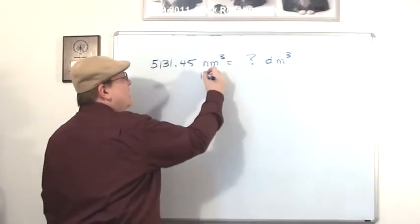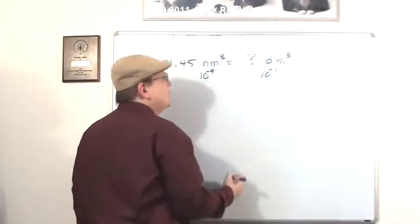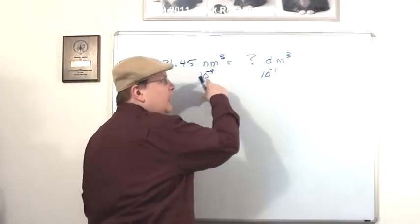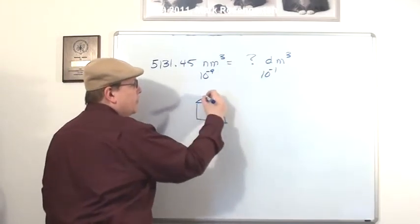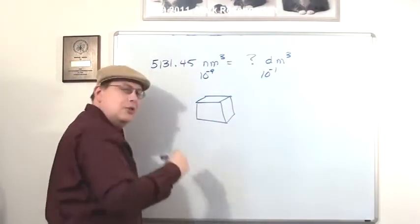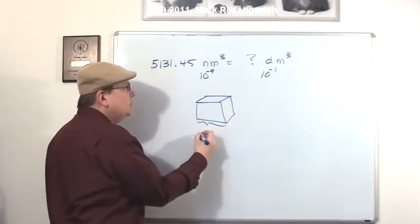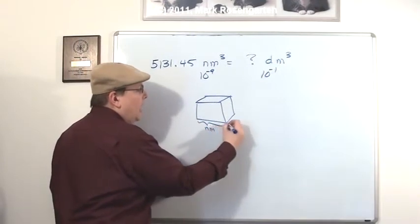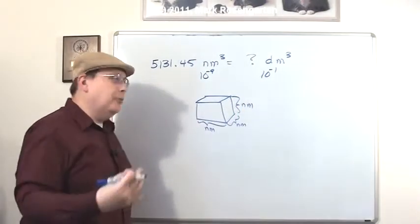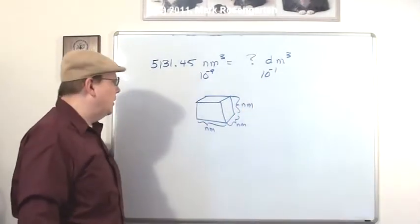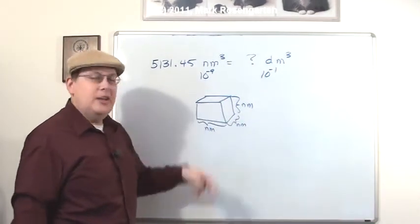The first thing you need to do is find out what the distance is between the factor of nano and the factor of deci. Now nano is 10 to the negative ninth meters, and deci is 10 to the negative first meters, a billionth of a meter and a tenth of a meter. Now what we're doing is when you're dealing with volume, you're dealing with cubic distance. For example, here we have a nanometer, and here we have another nanometer, and here we have a third nanometer. So we actually have three dimensions that we have to deal with. Nanometer in length, nanometer in width, and nanometer in height.